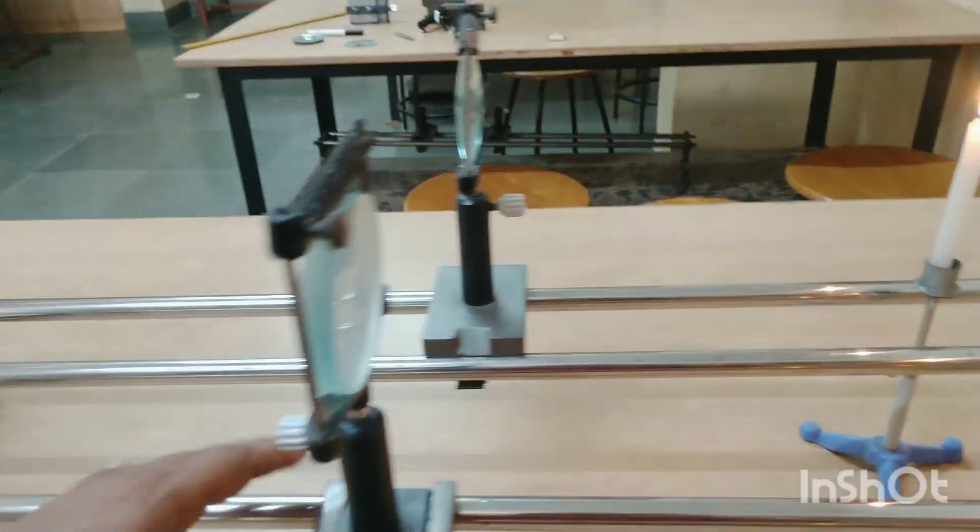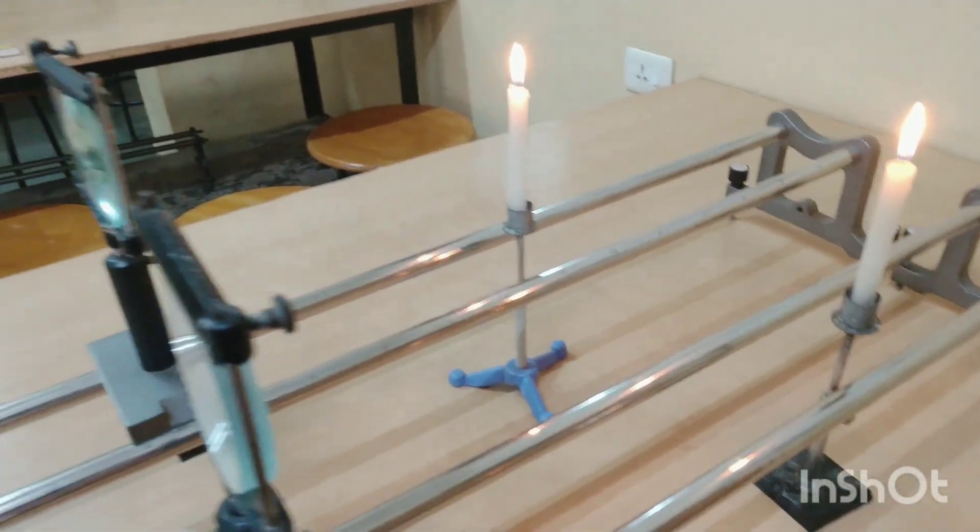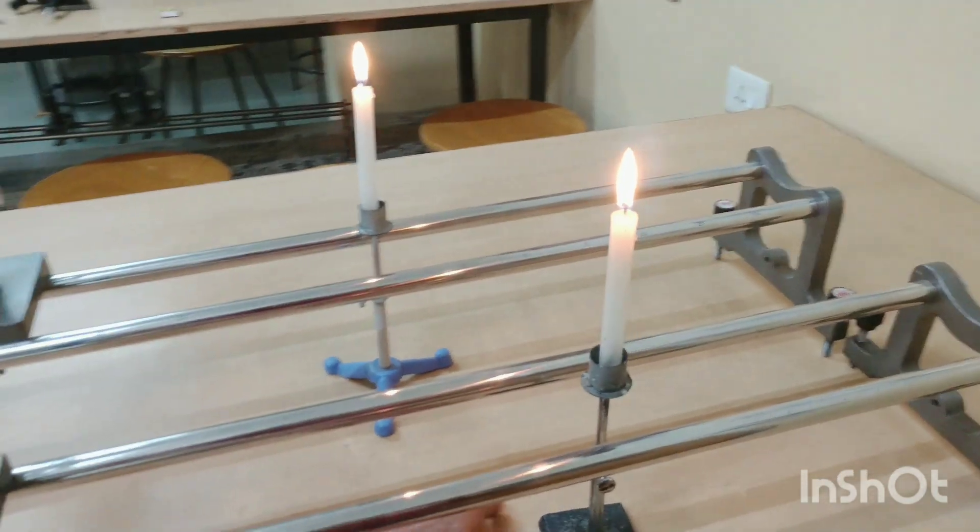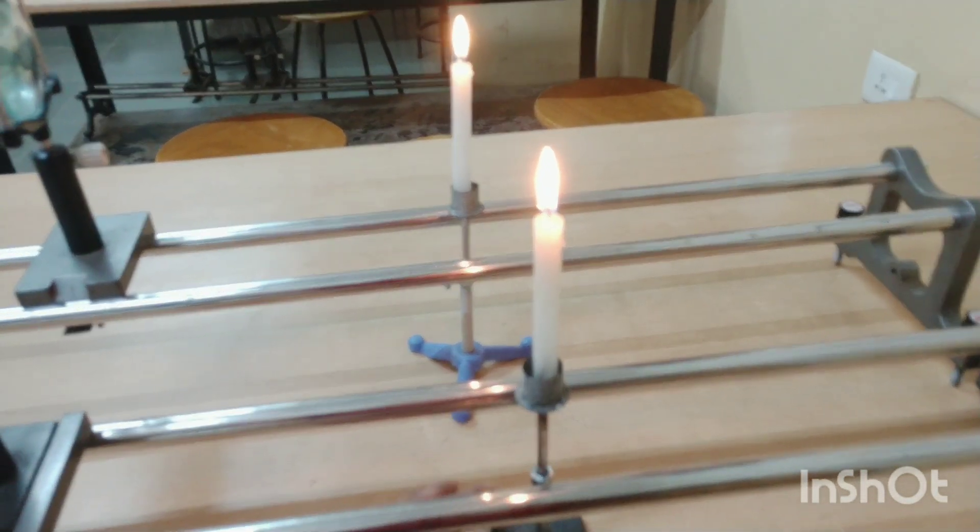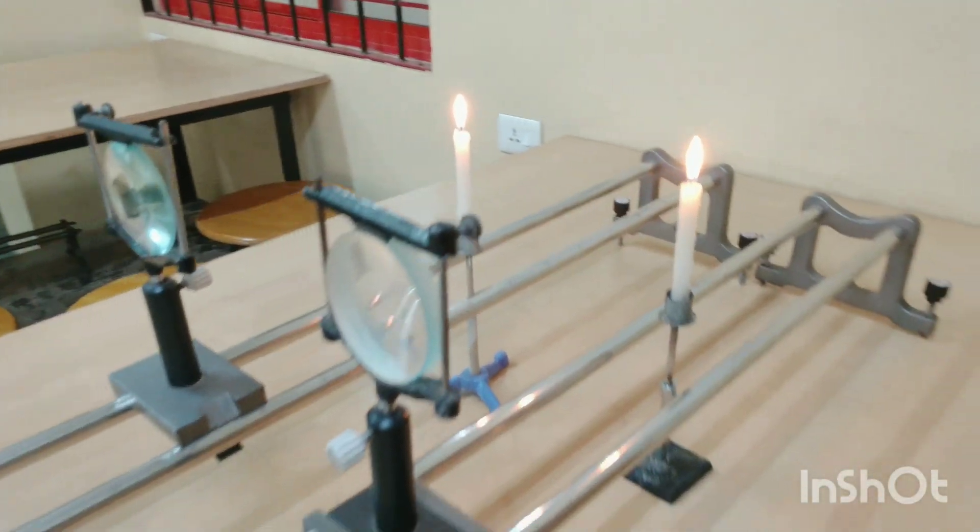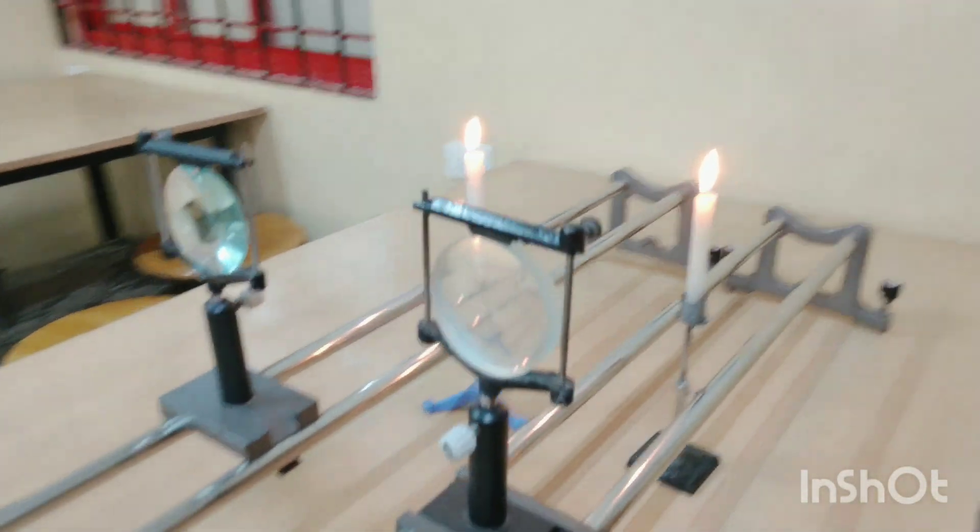So what we have here in the setup is for both lenses we have placed a candle as an object. Let us now try to look from the other side of the lens for the image through our eyes and also to the camera.